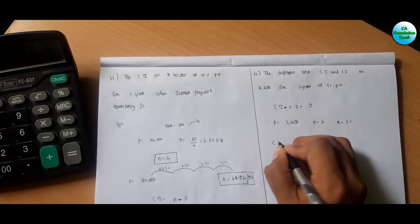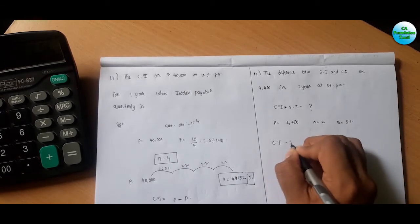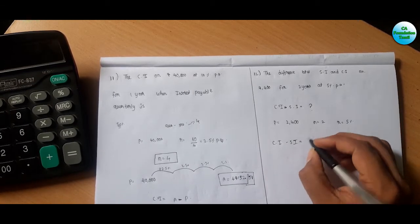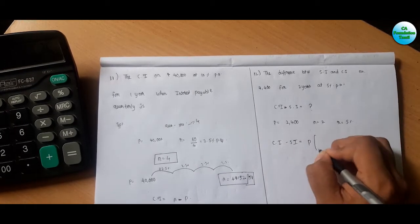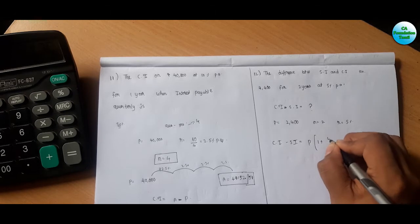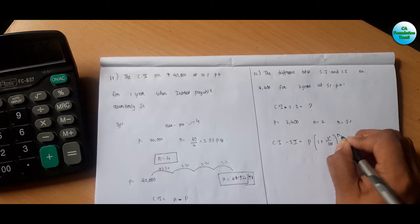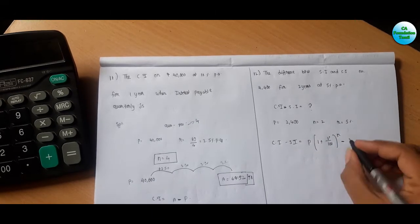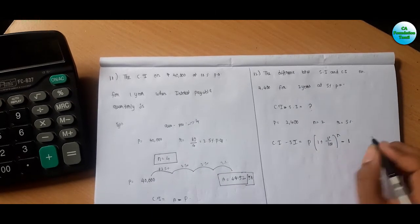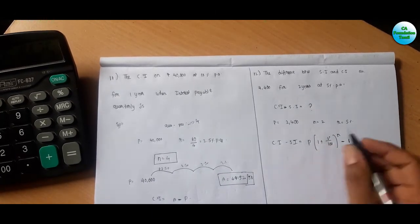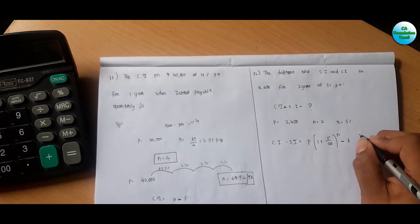CI minus SI is equal to: CI equals P times (1 plus R by 100) to the whole power N, minus 1. Next one, SI equals PIT divided by 100.